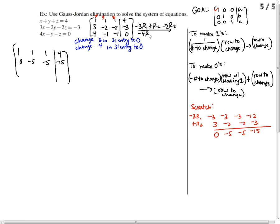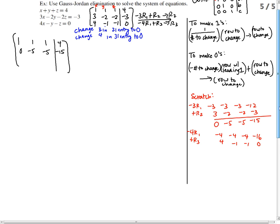I also want to change the 4 in the 3, 1 entry to 0. So, that's negative 4 times row 1 plus row 3 goes to row 3. Negative 4, row 1. Negative 4, negative 4, negative 4, negative 16. I'm going to add that to row 3, 4, negative 1, negative 1, 0.